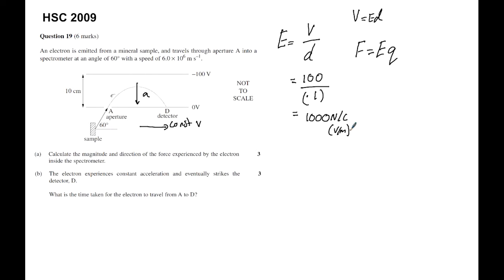Now that we know that, we can work out the force. The force is equal to the electric field we just worked out, which is a thousand, multiplied by the charge of an electron, which is 1.6 by 10 to the power of negative 19 coulomb.